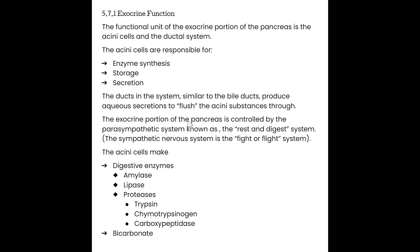The exocrine portion of the pancreas is controlled by the parasympathetic system — known as the rest and digest system. The acinar cells are responsible for creating amylase, lipase, and proteases. Those proteases include trypsin, chymotrypsin, and carboxypeptidase. The acinar cells are also responsible for creating bicarbonate. Each of those digestive enzymes is responsible for breaking down certain complex macronutrients: amylase breaks down carbohydrates, lipase breaks down fats, and the proteases break down different proteins.